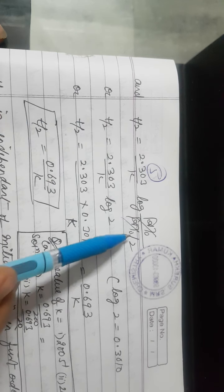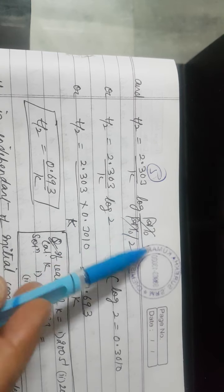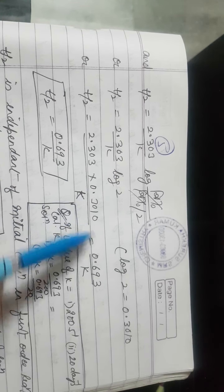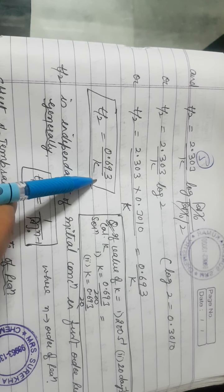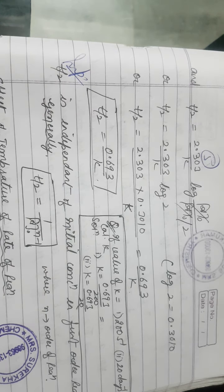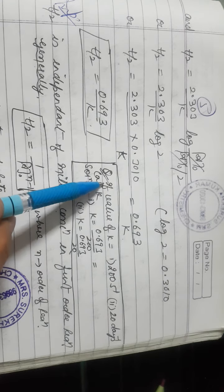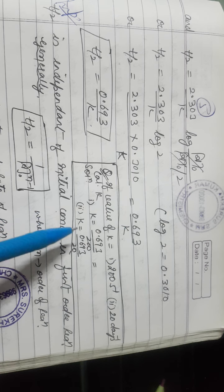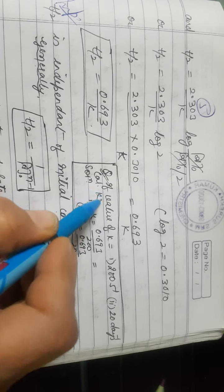Now we derive T½ for first order. At T½, A = A₀/2. Substituting: T½ = (2.303/K) × log(A₀/(A₀/2)) = (2.303/K) × log 2. Since log 2 = 0.3010: T½ = 0.693/K. If K = 200 s⁻¹, then T½ = 0.693/200. If K is given, use this formula to find T½; if T½ is given, use the same formula to find K.